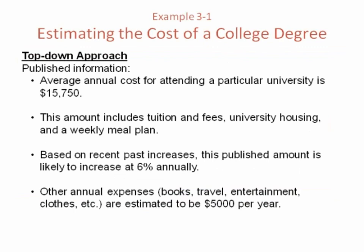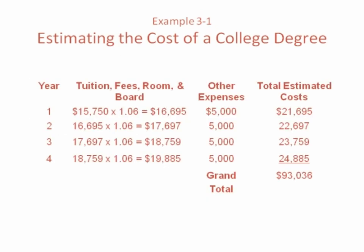Here's an example of using the top-down approach. If you look at a particular university's published annual average costs — say $15,750, including tuition and fees, housing, and weekly meal plan — and you noticed that costs had increased at 6% per year over the last several years, you could extrapolate into the future how much that's going to cost, adding other expenses like travel, entertainment, and clothing. A top-down approach to estimating the total cost of an education is shown here. In year one, tuition is multiplied by 1.06 — if costs were $15,750 this year, they'll be $16,695 next year, and again multiplied by 1.06 the year after.